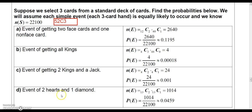And then the event of two hearts and one diamond. That would be out of the 13 hearts, you want to choose two. And out of the 13 diamonds, you want to choose one. And so multiply those together, you get 1,014. Divide that by 22,100 and you get 0.0459.